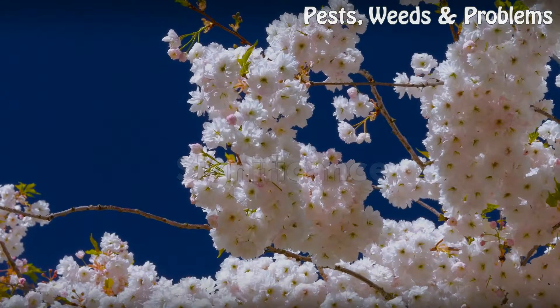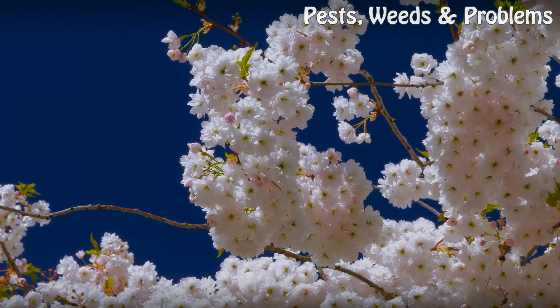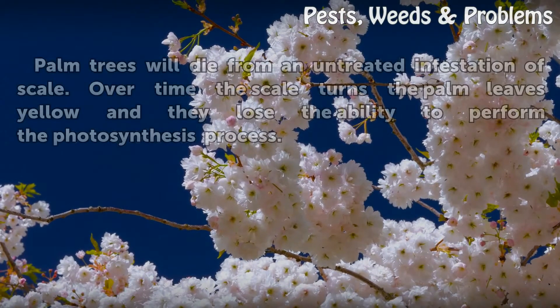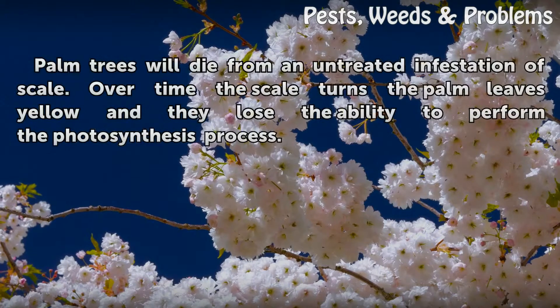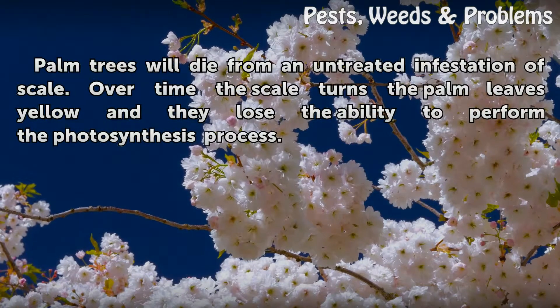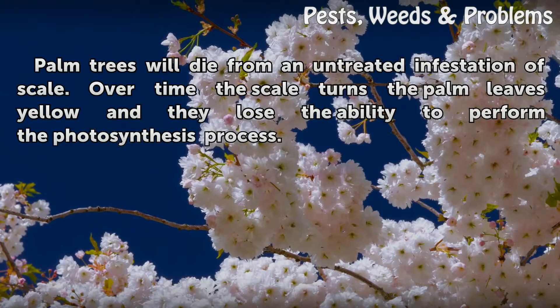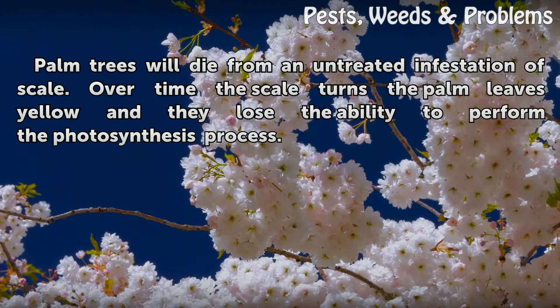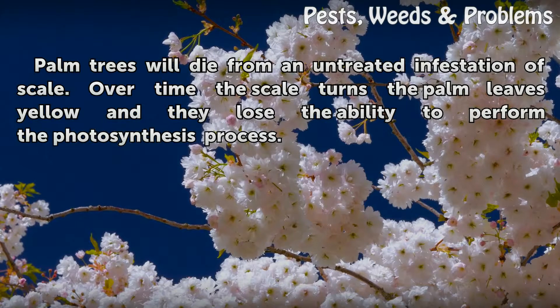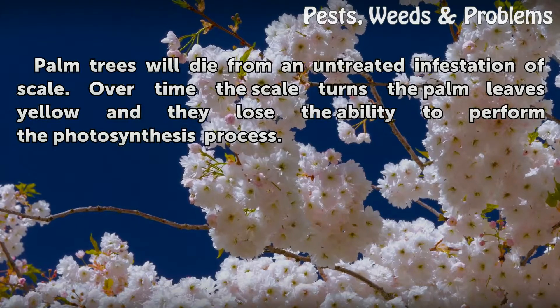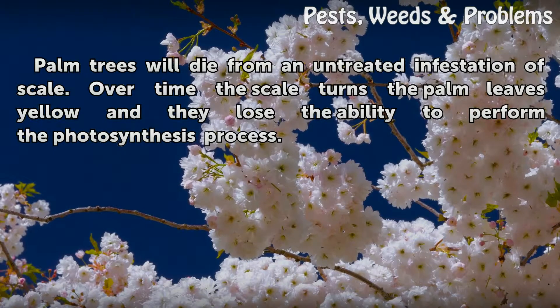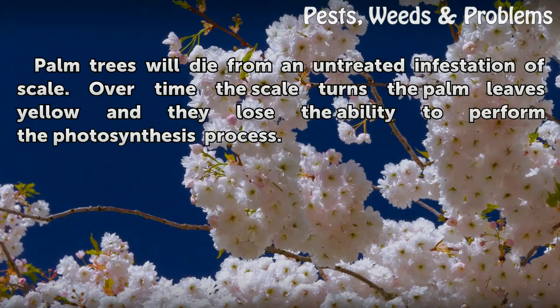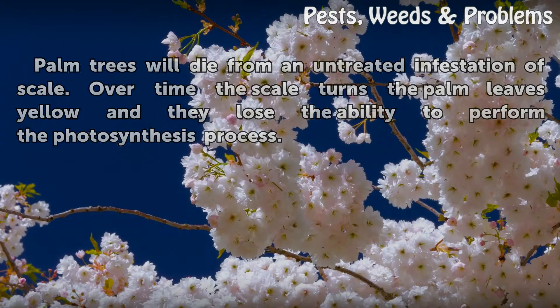Significance. Palm trees will die from an untreated infestation of scale. Over time, the scale turns the palm leaves yellow and they lose the ability to perform the photosynthesis process.